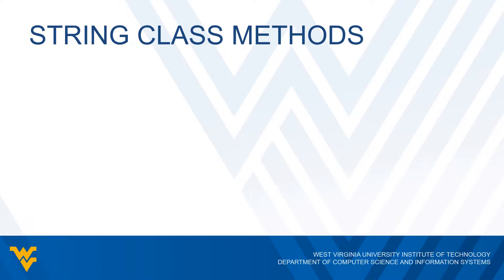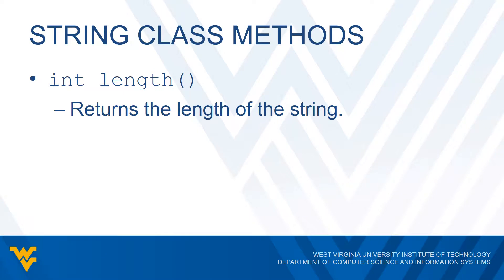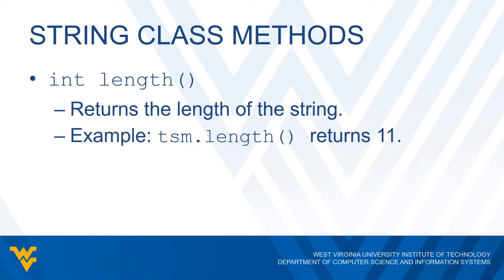The next method we'll take a look at is the length method. All this simply does is return the length of the string. As we said earlier, the length is just the number of characters. So if we use our example TSM.length, this is going to return 11 because there are 11 characters in the string.